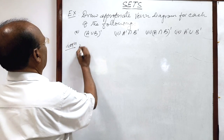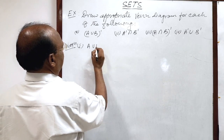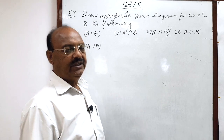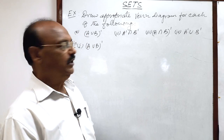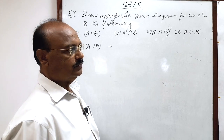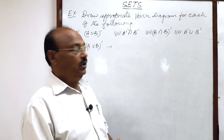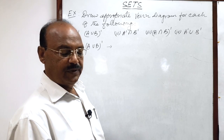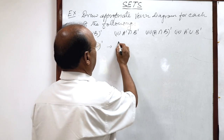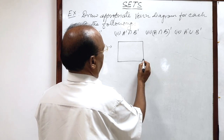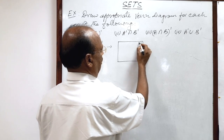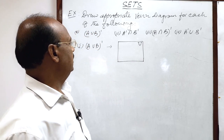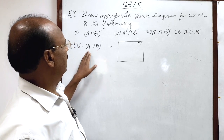First, let us take the question where we have to represent A union B whole complement using a Venn diagram. There is a very important role in the Venn diagram, and that is known as the universal set. The universal set is represented with the help of a rectangle, and in the right top corner we write U to represent the universal set. Here, A and B are two sets.